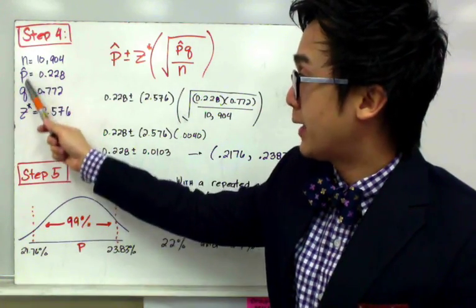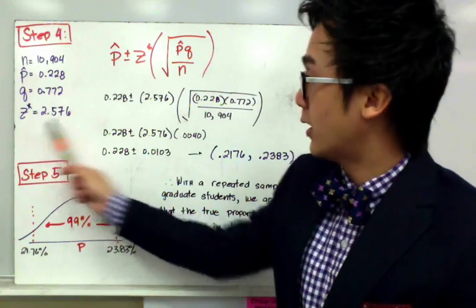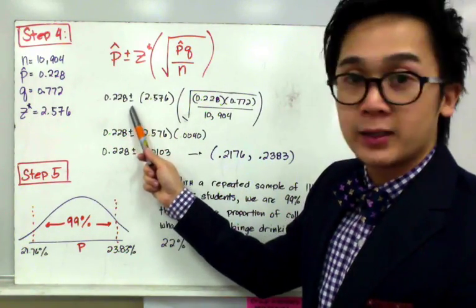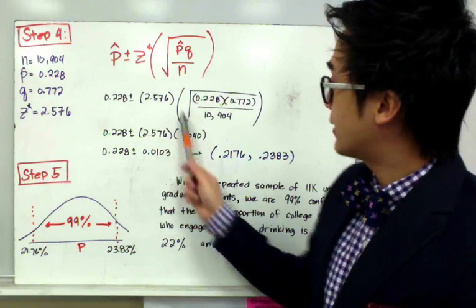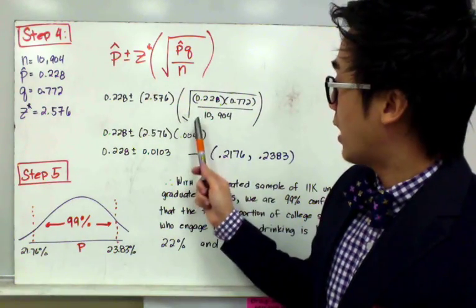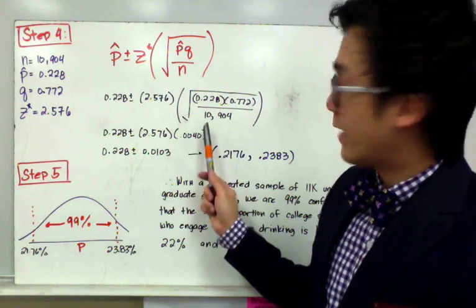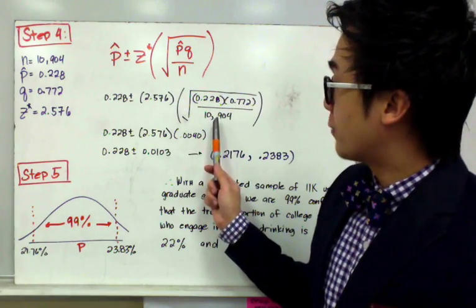We have our N, P hat, Q, and Z star. By direct substitution, we'll have 0.228 plus or minus 2.576 times the standard error, which is the square root of 0.228 times 0.772 all over 10,904.